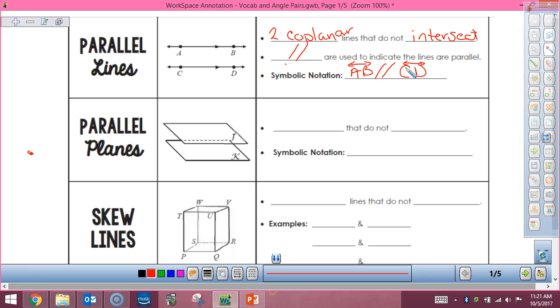Parallel planes are going to be planes that do not intersect. In this case we've got plane J is parallel to plane K. So my cart, right here - the top of my cart is a plane, the middle shelf is a plane, and the bottom shelf is a plane. Those are all parallel planes because they're never going to intersect each other. Also, like if they were closed off on this side, this side would be parallel to this side.